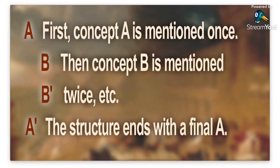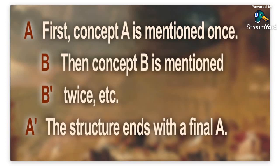So what is the chiasm? Concept A is mentioned once, then concept B is mentioned twice, so it goes A, then BB, then A again — the structure ends with a final A. We use little marks to show it's the second time. The best example is from Genesis, which has more chiasm than probably any other book in the Bible. People have always known about this parallel structure since ancient times, but it became really popular about 150 years ago in the 1800s, and recently it's become very popular to find all the places in the Bible where there's repetition and chiastic structure.